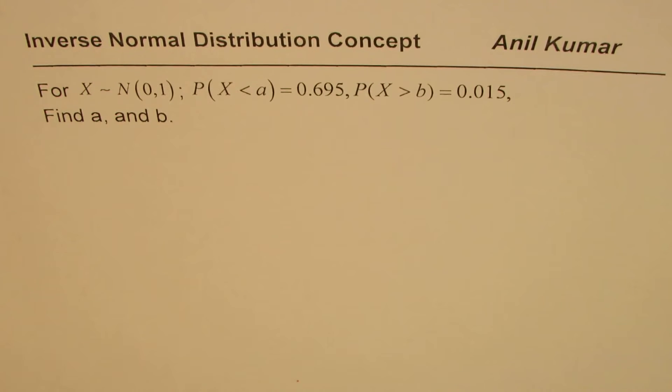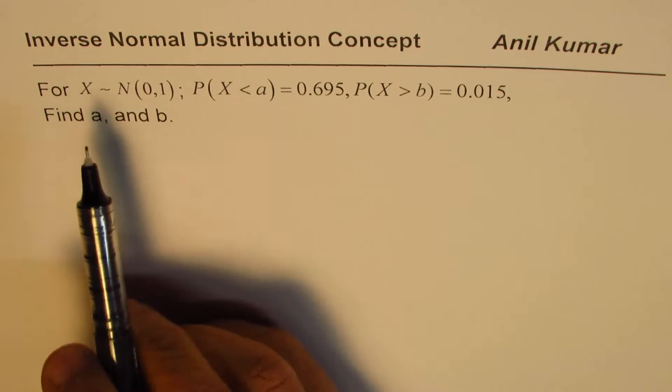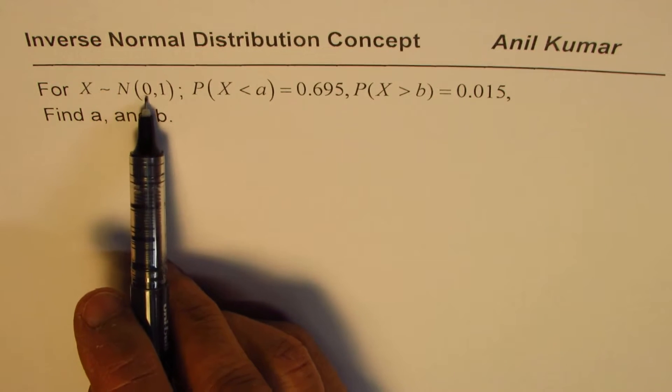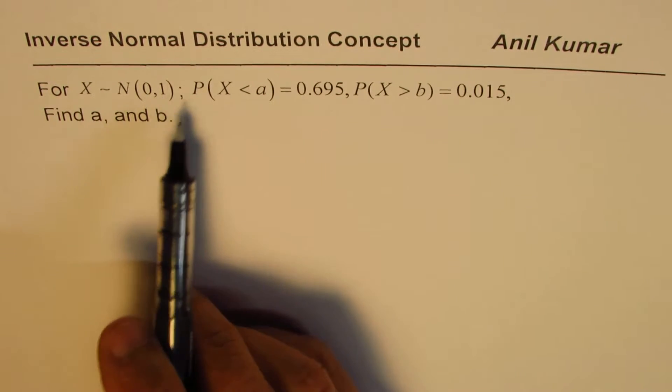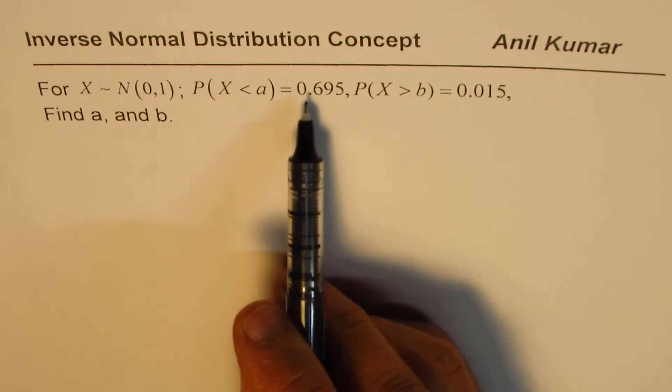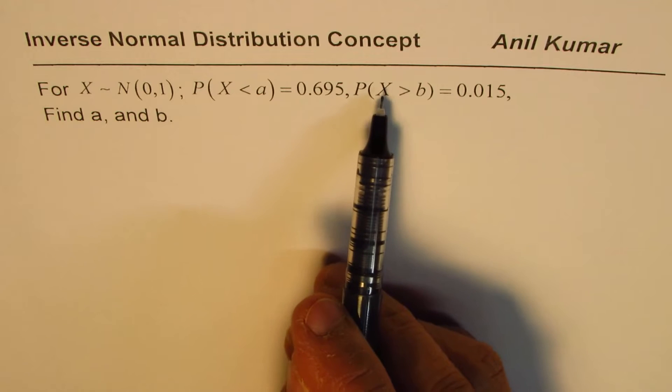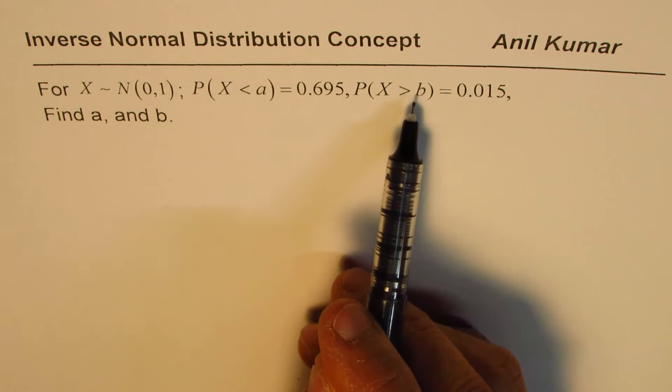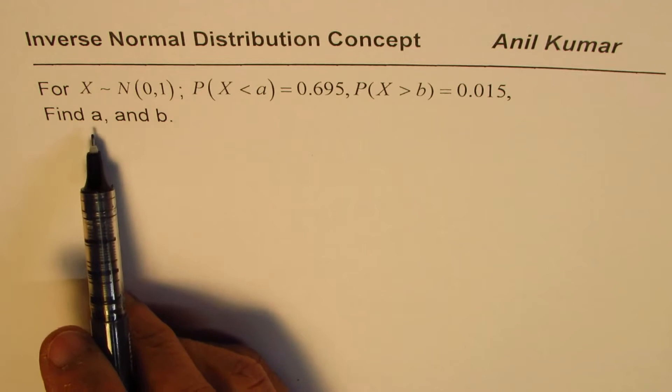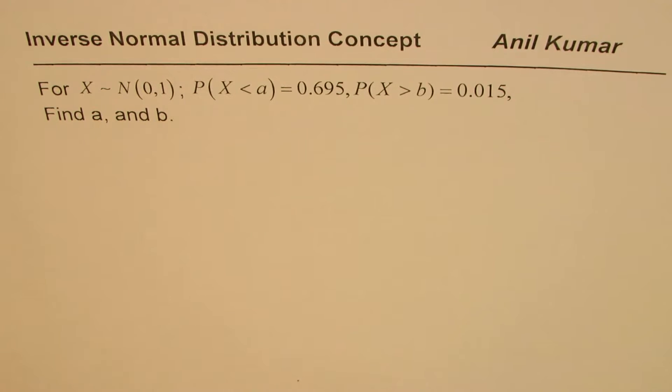I am Anil Kumar and in this video we will learn how to find inverse normal distribution. We are given that for random variable X which follows a normal distribution with mean of 0 and variance of 1, probability for X to be less than a is given as 0.695 and probability for X greater than b is 0.015. We need to find the values of a and b. You can pause the video, answer the question and look into my suggestions.